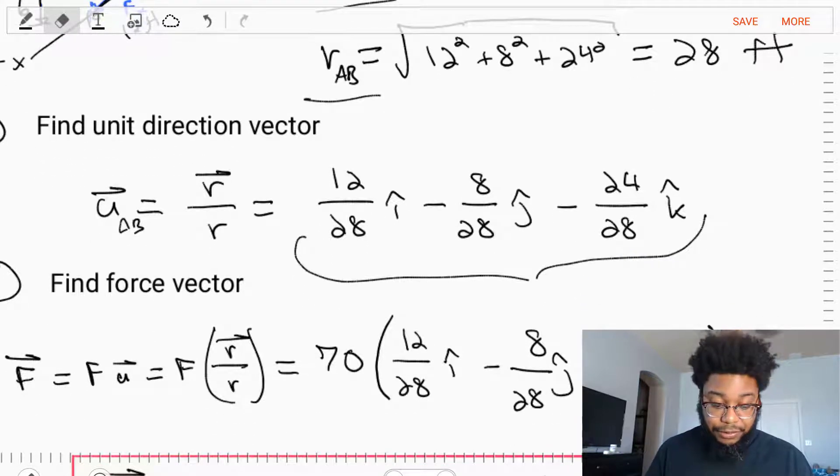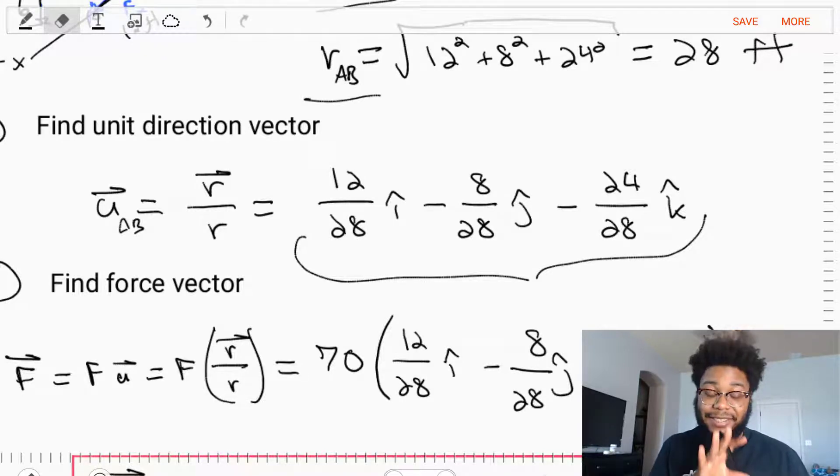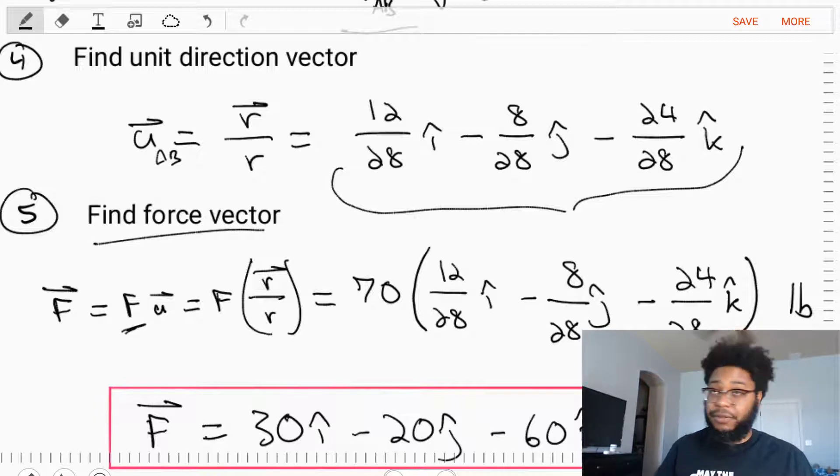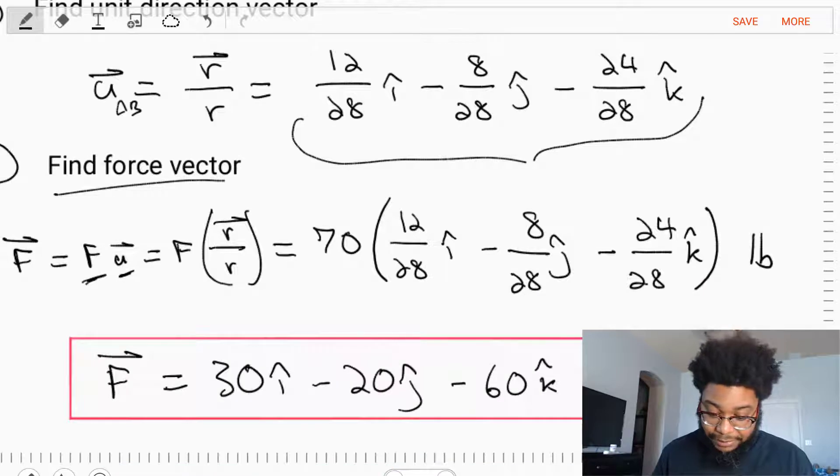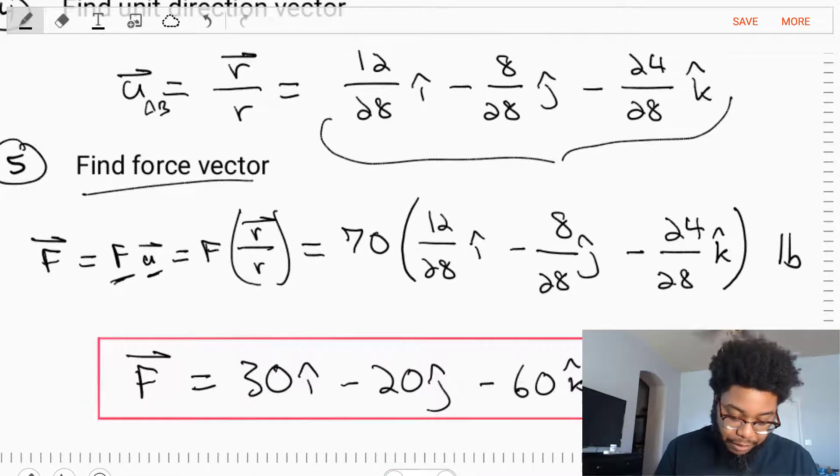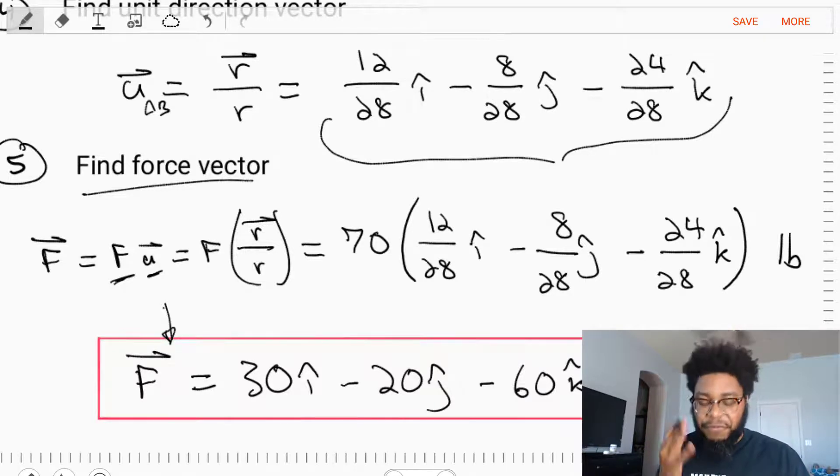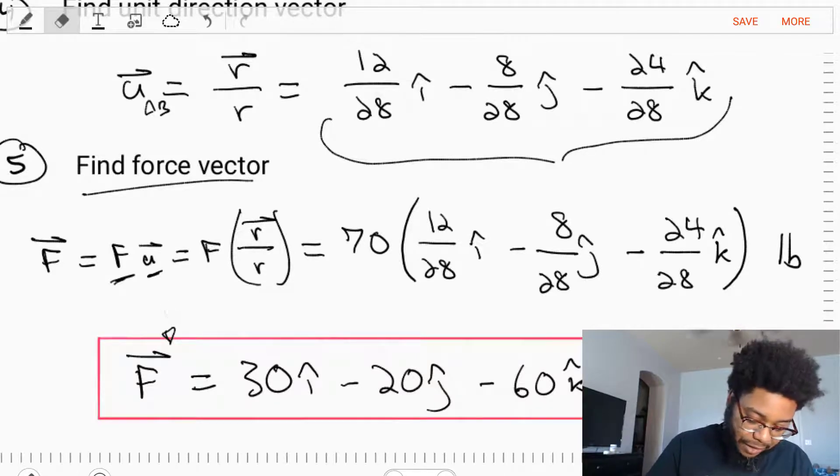This is great, because for our force vector, we know the magnitude of the force, and we need its direction. It has the same direction as the position vector. So to find our force vector, we simply take the magnitude of the force, 70 pounds, and we multiply by the unit direction from A to B, the unit direction we found. We put that together, and we'll find that our force vector is equal to 30i minus 20j minus 60k pounds. We found our force vector in Cartesian notation. Alright, so that's part A of this problem.